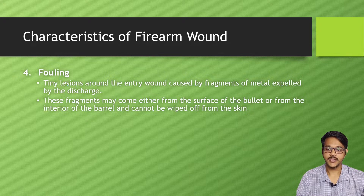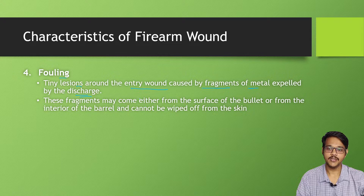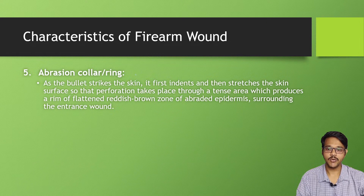Next is fouling. These are tiny lesions around the entry wound caused by fragments of metal expelled during discharge. Defects in the barrel or in bullets may cause fragments to be expelled and become embedded in the tissue. These fragments may come from the surface of the bullet or from the interior of the barrel and cannot be wiped off from the skin.